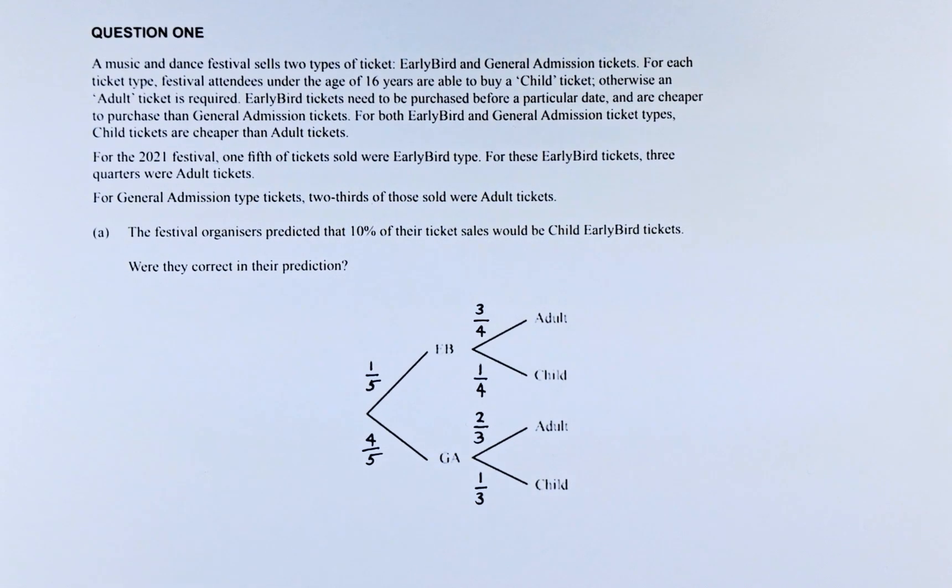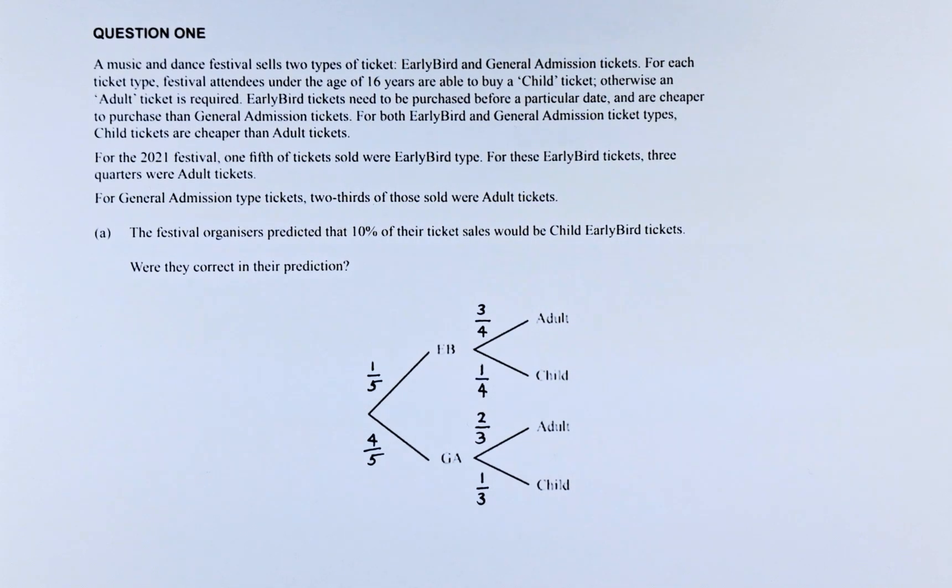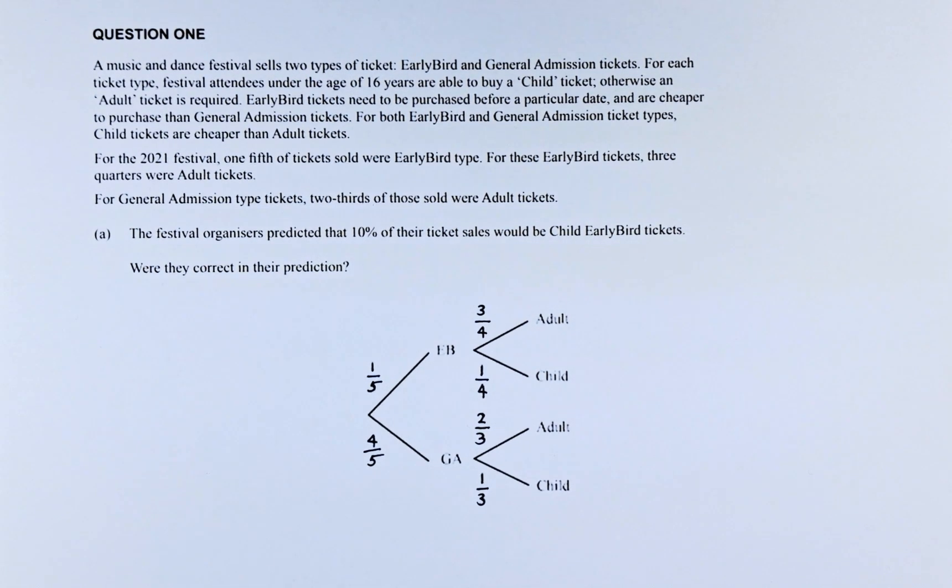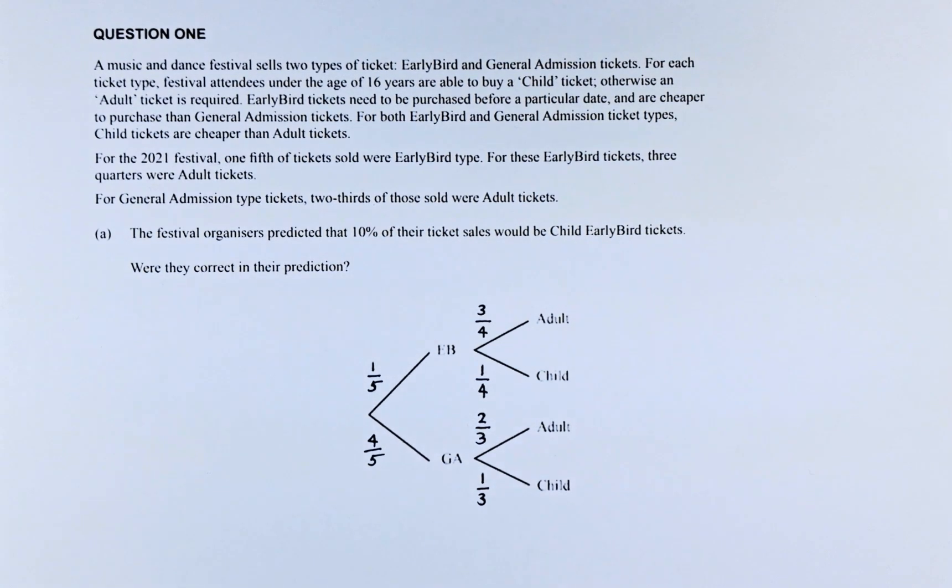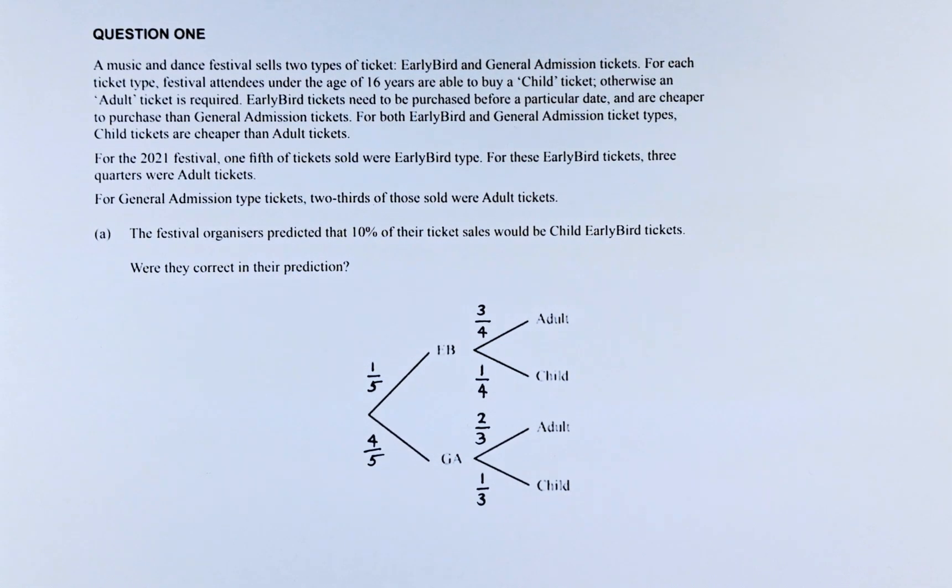For question 1A, the question reads like this. A music and dance festival sells two types of tickets: early bird as well as general admission tickets. For each ticket type, festival attendees under the age of 16 are able to buy a child ticket. Otherwise, an adult ticket is required. Early bird tickets need to be purchased before a particular date and are cheaper to purchase than general admission tickets. For both the early bird and general admission type, child tickets are cheaper than adult tickets.